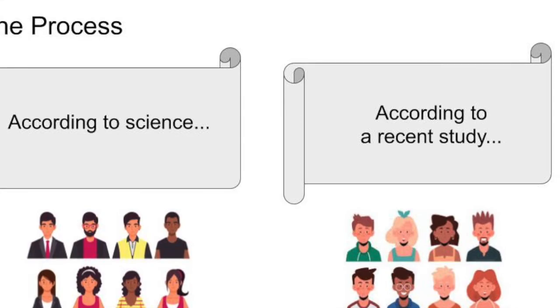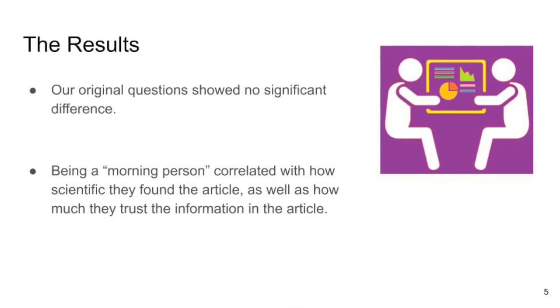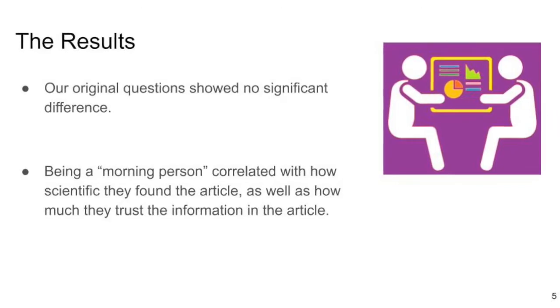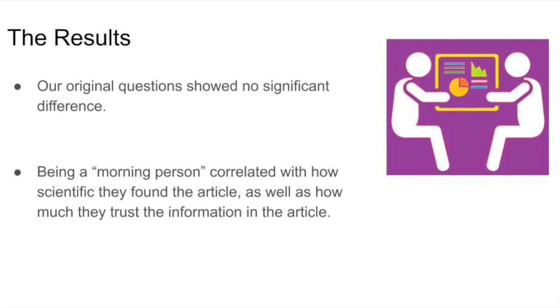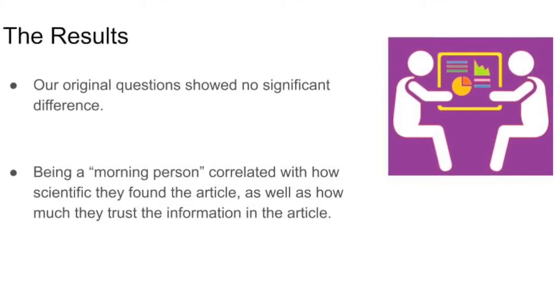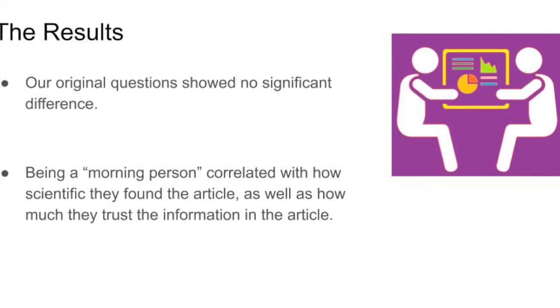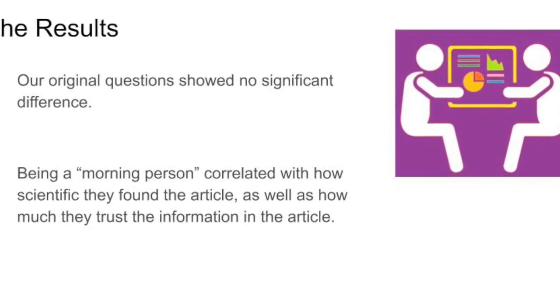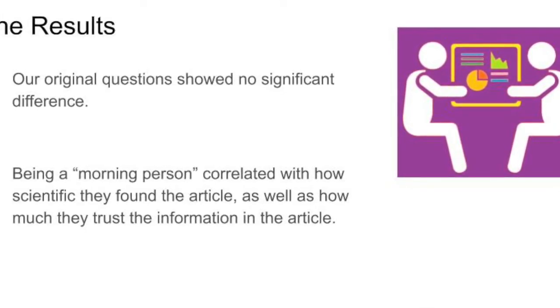And what we found was that our original questions of whether people would think that one article versus the other was different in some way, there wasn't really a significant difference between that. However, we did find that people that considered themselves to be a morning person was correlated with how scientific they found the article, as well as how much they trusted the information in the article. So it shows a little bit of a confirmation bias there.